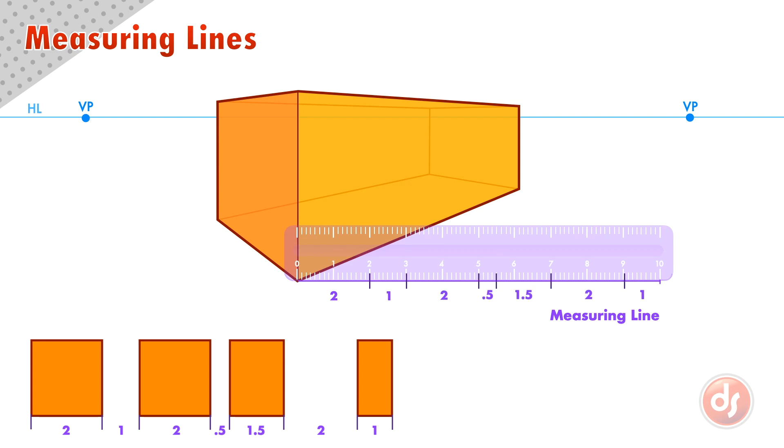In this example, our measuring line was the same length as our reference boxes, but that won't always be the case. The line could have been half the size or twice as big. As long as we divide it up in the same ratio as our reference, it will work out the same. This means you can make the measuring line any size that is comfortable for your page.